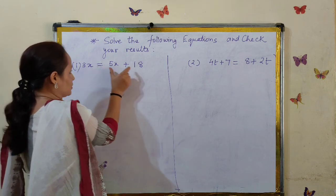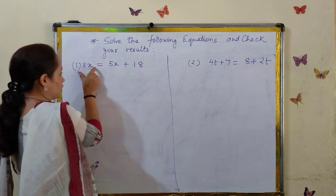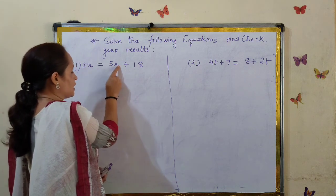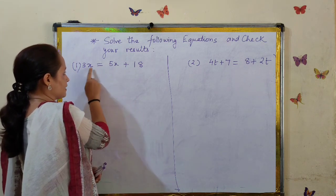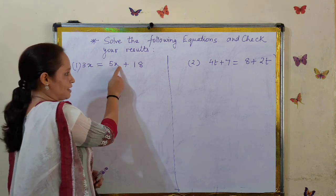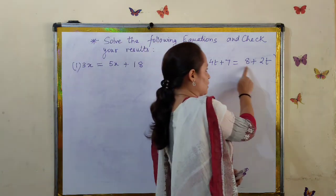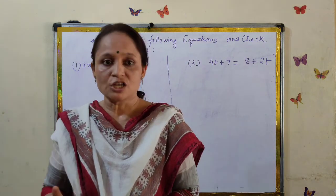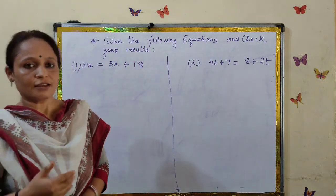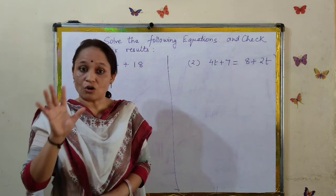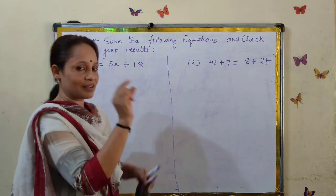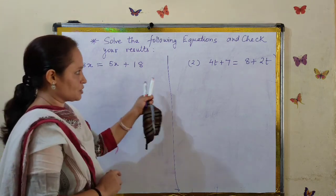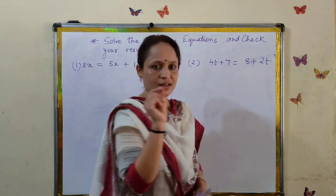Both the left-hand side and right-hand side of the equation are algebraic expressions in one variable and linear as well. In the last video, one side was constant — but this time both sides are algebraic expressions. None of the two sides is constant.